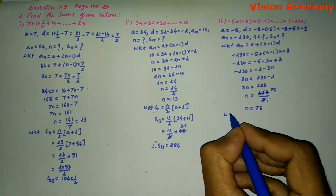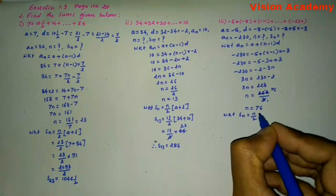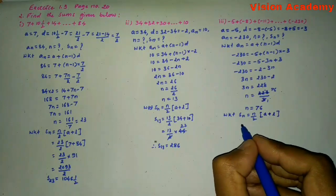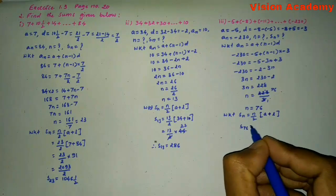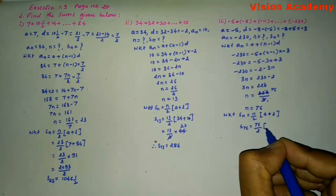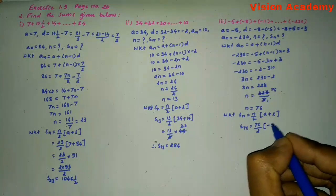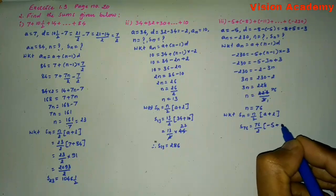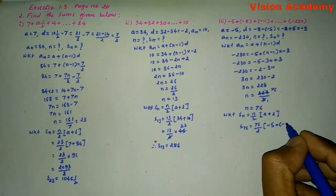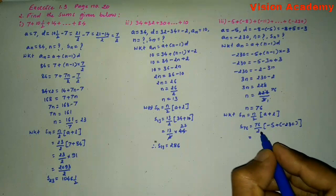Now we know that SN equals N by 2 into (A plus L). So S76 equals 76 divided by 2 into (minus 5 plus minus 230), which is 38 into minus 235, giving S76 equals minus 8,930.